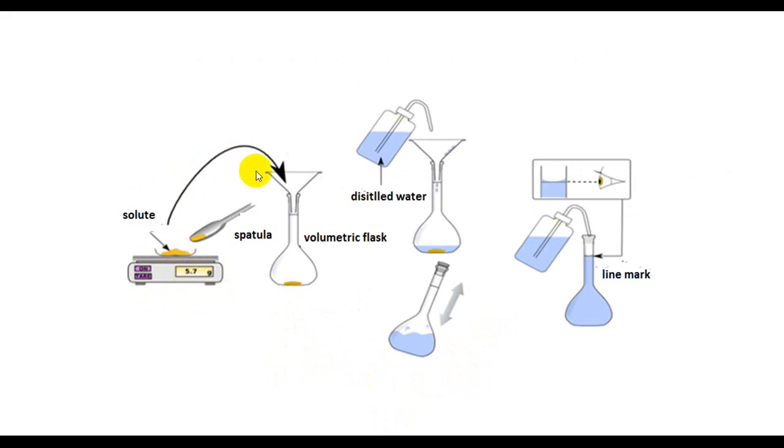You have to transfer the solute into the volumetric flask. Then, add water to the middle or to the half of the volumetric flask. Make a swirling in order to dissolve the whole solute.